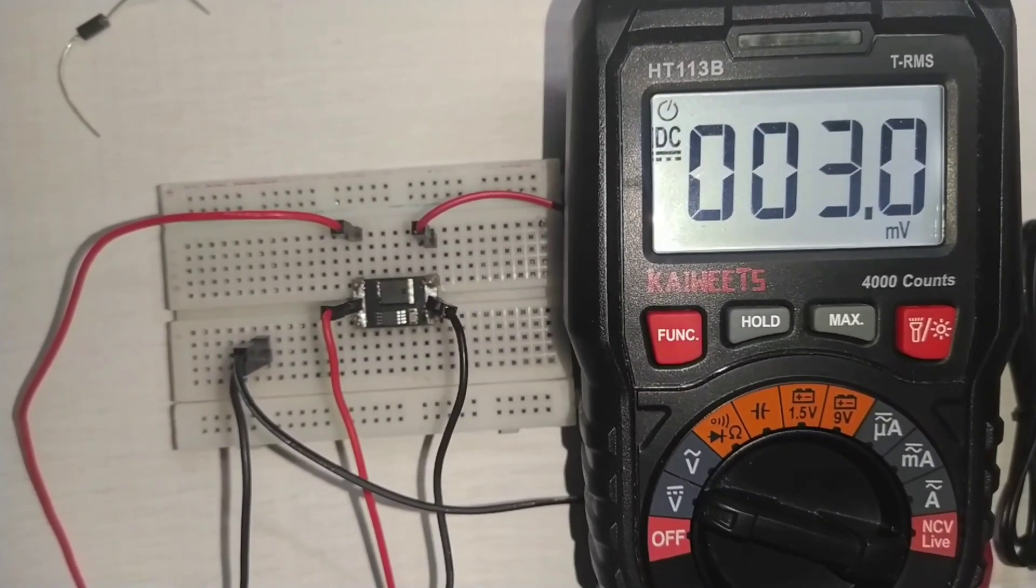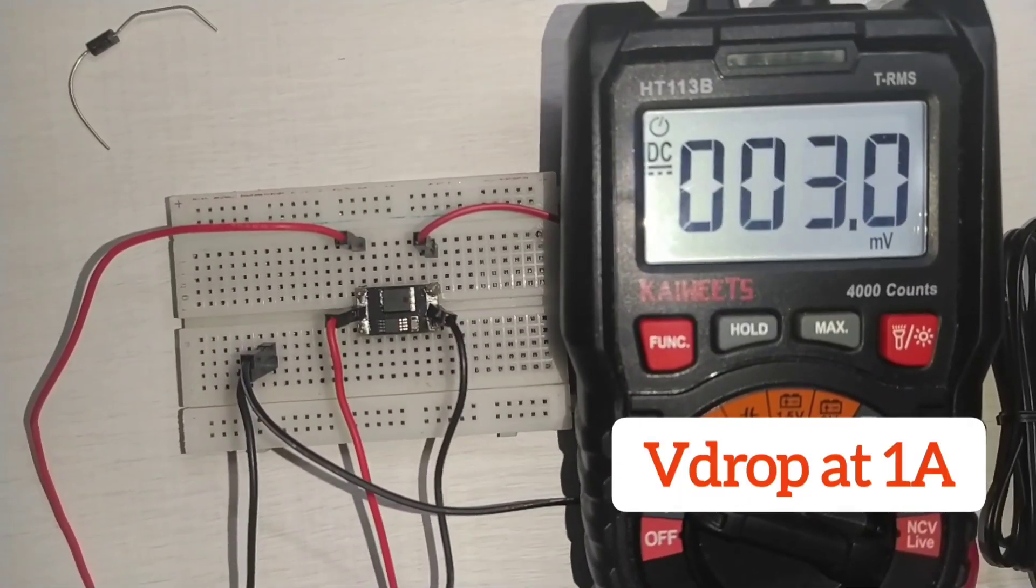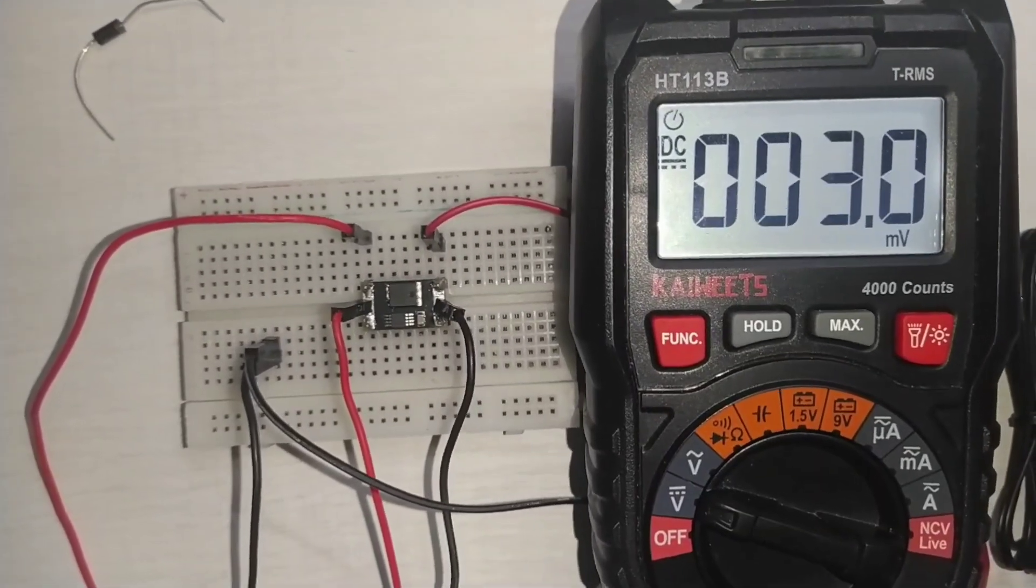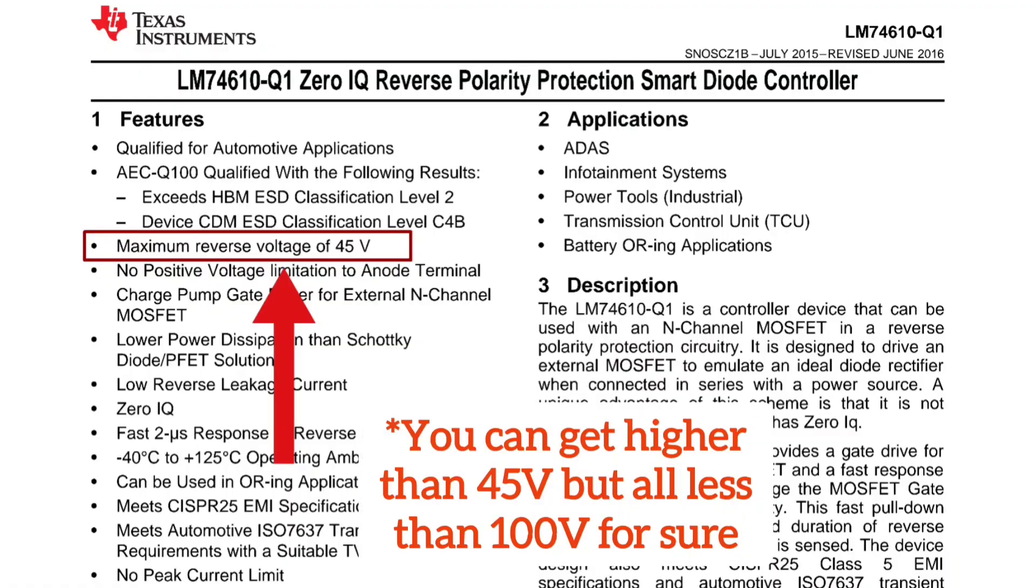Obvious advantages of those ICs are the low voltage drop and the various other protection features. Unfortunately, those ICs are only good at some tens of volts. So not suitable for high voltage applications.